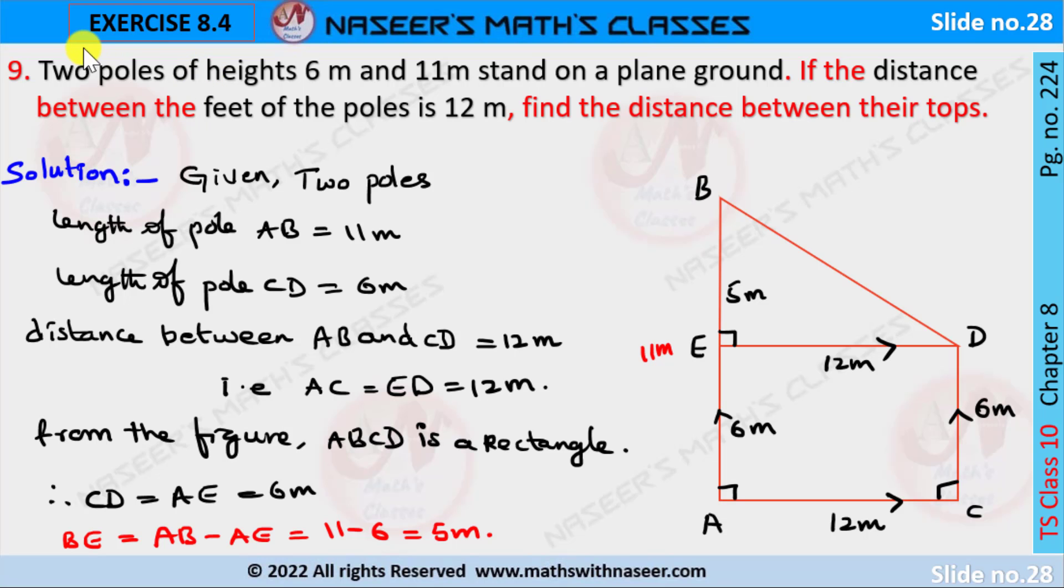After similar triangles, exercise 8.4, problem 9. Two poles of heights 6 meters and 11 meters stand on a plane ground. If the distance between the feet of the poles is 12 meters, find the distance between their tops.